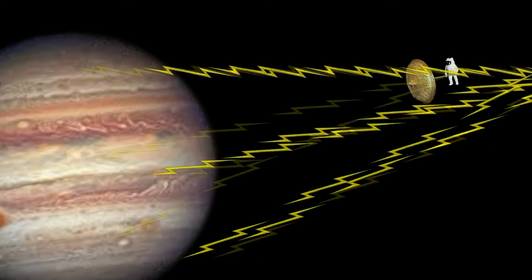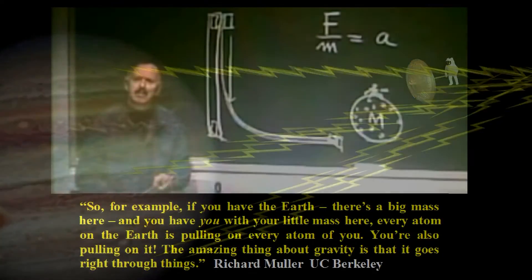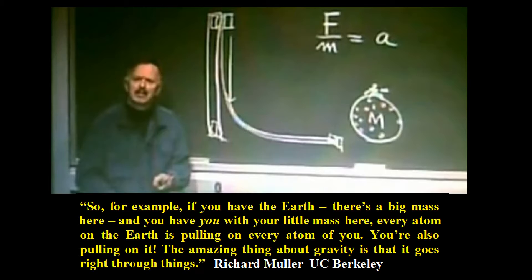Indeed, a prominent Berkeley professor succinctly describes our extensive experience with gravity and clarifies what a theorist is required to explain mechanistically. So, for example, if you have the Earth, there's a big mass here, and you have you with your little mass here. Every atom on Earth is pulling on every atom of you. You're also pulling on it. The amazing thing about gravity is that it goes right through things. Richard Muller, University of Berkeley.